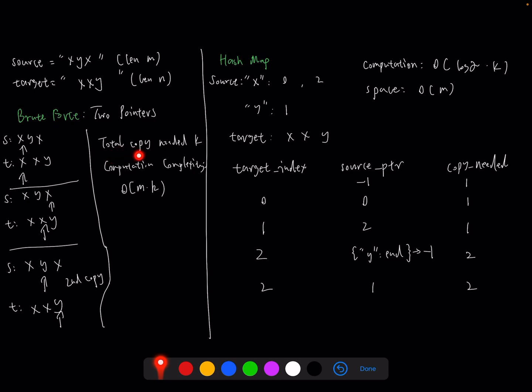Let's also denote total copies needed for any example as K. So this brute force algorithm will require big O of M multiplied by K complexity. The M is the source length.